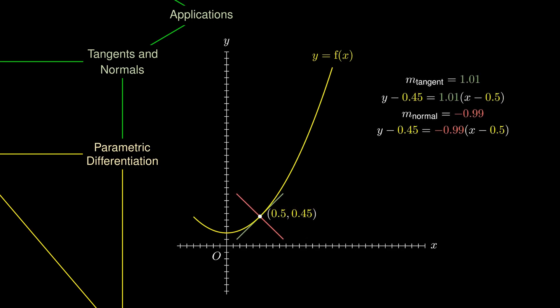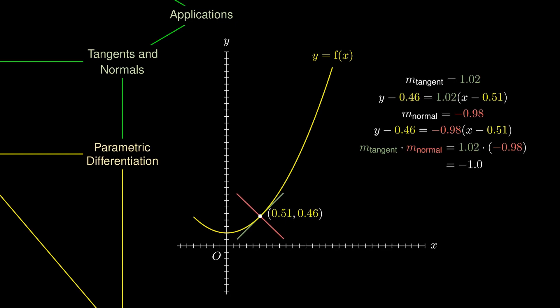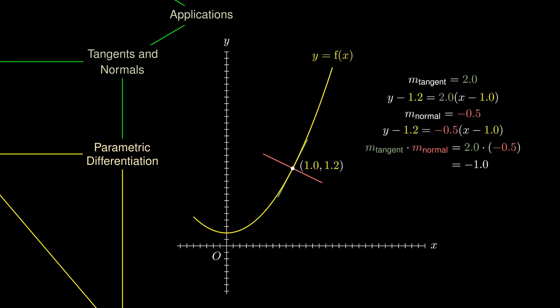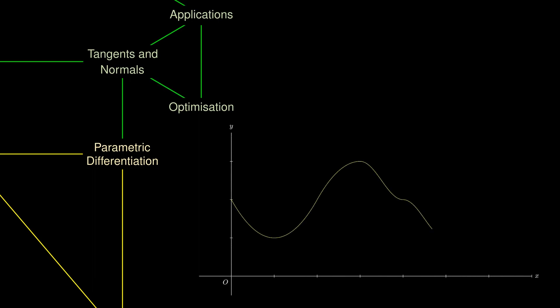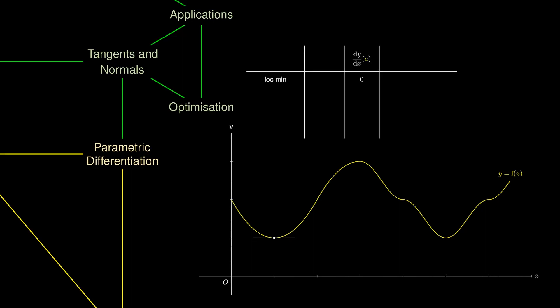Something remarkable happens when we calculate the gradient of the tangent multiplied by the gradient of the normal: the product of the gradients will always equal negative 1, no matter which point we choose on the curve. Differentiation is also very useful for optimizing various quantities. As a point moves along a curve and reaches a local minimum, the gradient of the curve is 0. We know it's a local minimum because nudging the point to the left gives a negative gradient, while nudging it to the right gives a positive gradient. This is known as the first derivative test for local minimum.